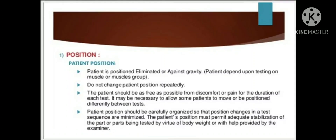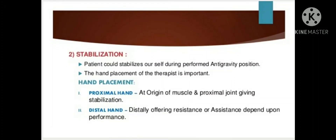Positioning of the patient is an important principle. The position depends upon the muscle being tested, and the patient should be free from discomfort or pain. Stabilization is provided by the hand placement of the therapist. The proximal hand of the therapist is placed at the origin of the muscle and the proximal joint to provide stabilization. The distal hand of the therapist provides resistance or assistance depending upon the performance of the patient.